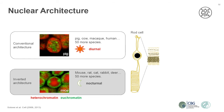Interestingly, the rods of nocturnal animals show an inverted architecture. Here, the heterochromatin is located in the center of the nucleus, which is compacted, and the euchromatin is pushed to the periphery. This raises many biologically interesting questions, and since this is happening in the retina, the main question was: does this have any optical effects?